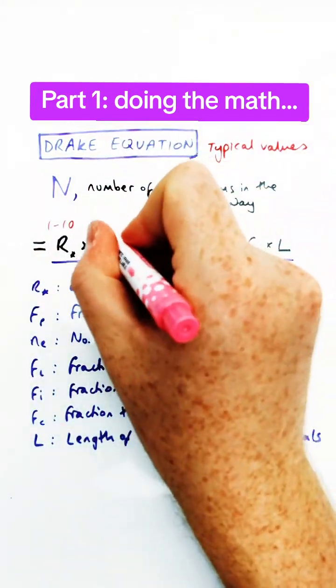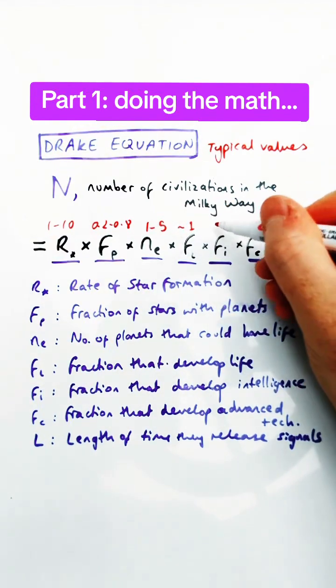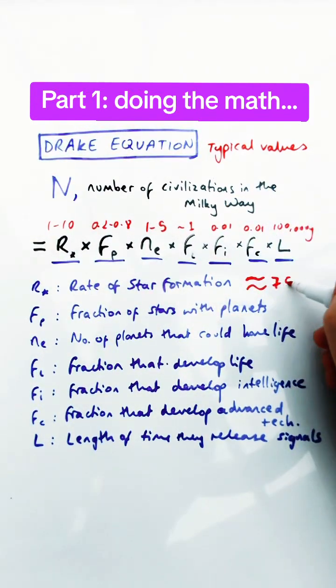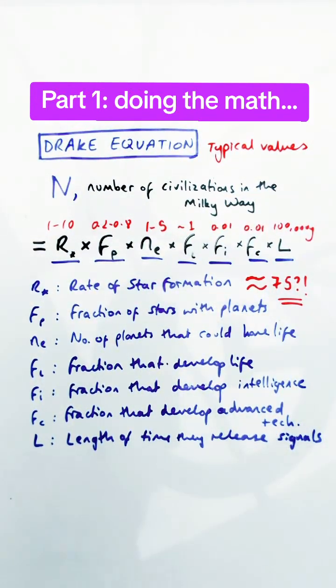The values to use in this equation are very much up for debate. Just using conservative values here, I've come up with a figure of 75 alien civilizations just in our galaxy.